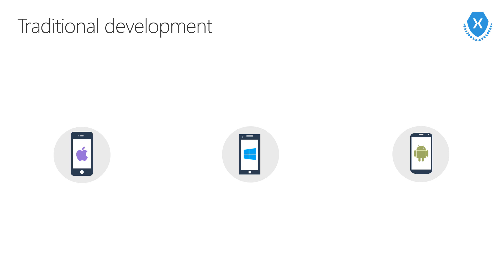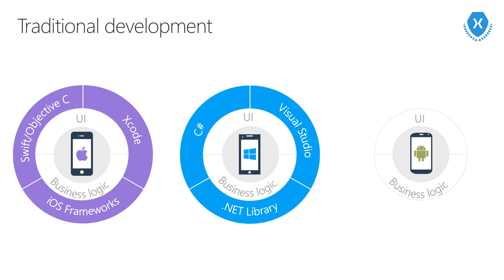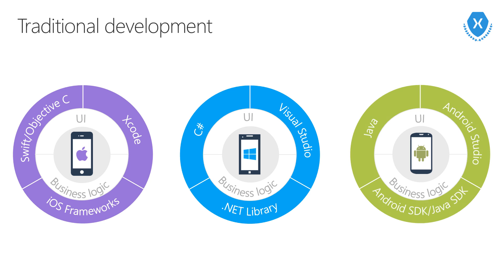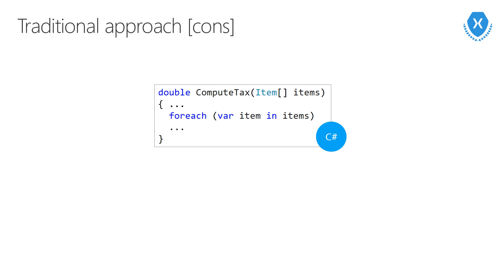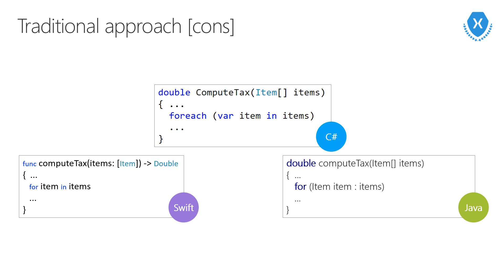Writing an app means adding business logic and creating a UI. Using the traditional development approach, we would build our iOS application using Objective-C or Swift in Xcode; we build our Windows app using C# and Visual Studio using the .NET libraries; and we would build our Android app using Java and Android Studio, using the Android SDK and the Java SDK. Writing applications for each platform means we need expertise on each of those platforms with each vendor-specific language — so C#, Java, and either Objective-C or Swift — and the entire application needs to be repeated in each language.